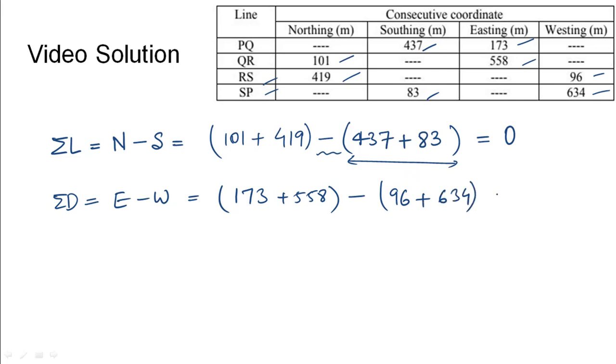The summation of departures would turn out to be 1. Using these two values we can find the magnitude of closing error as summation of latitude whole square plus summation of departure whole square. This would give out 0 plus 1 that would be 1.